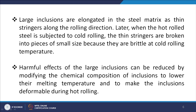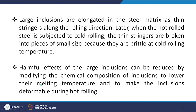By modifying the chemical composition of inclusions, their melting temperature can be lowered and inclusions can be made deformable during hot rolling, making their effect less harmful. Additionally, impurities that dissolve in the melt and form precipitates during solidification must also be minimized to make the steel cleaner.